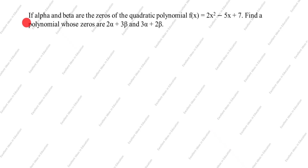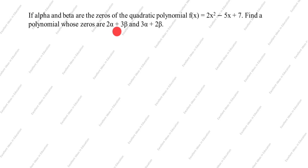Hi friends, welcome to my channel Excellent Ideas in Education. Today we are going to solve this quadratic polynomial problem. This is a very important problem: if alpha and beta are the zeros of the quadratic polynomial f(x) = 2x² - 5x + 7, find the polynomial whose zeros are 2α + 3β and 3α + 2β.